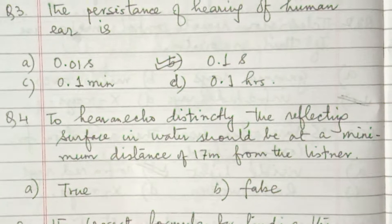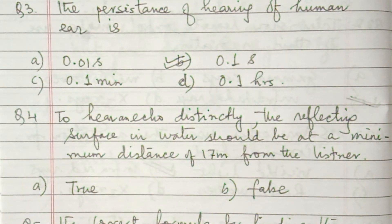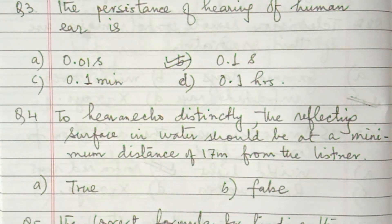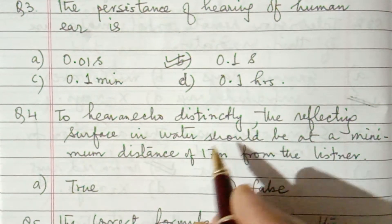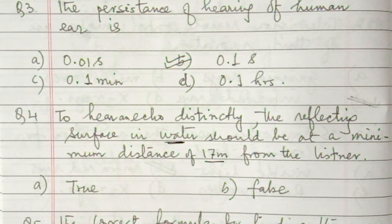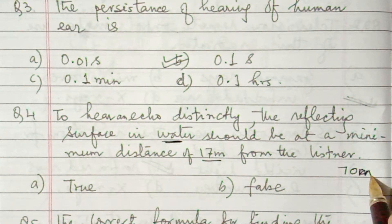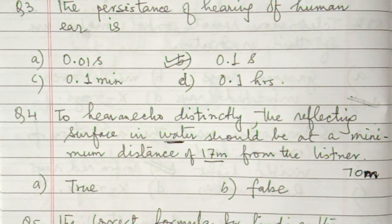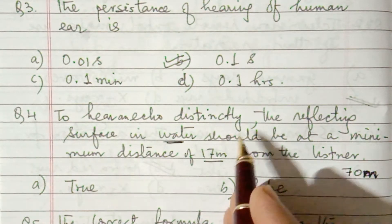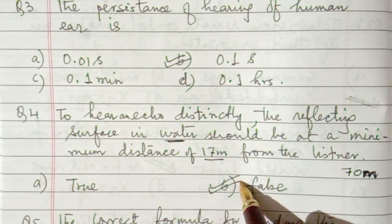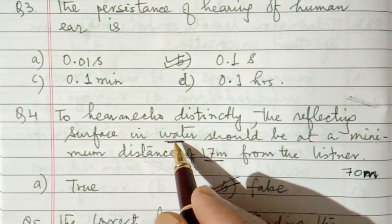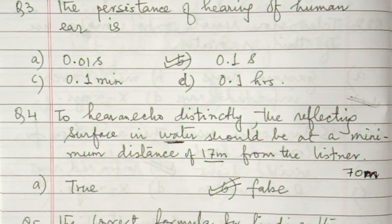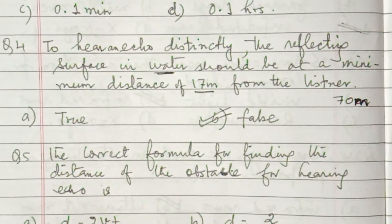Question number 4: to hear an echo distinctly, the reflecting surface in water should be at a minimum distance of 17 meters from the listener. The answer is false. In water, the minimum distance is 70 meters because the speed of sound in water is 1400 meters per second. 17 meters is the correct minimum distance in air. So you have to read the question carefully — 17 meters is for air, not water.